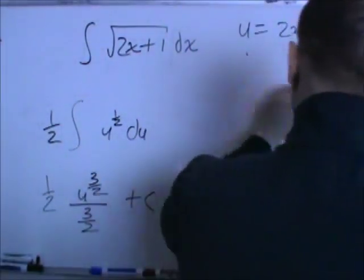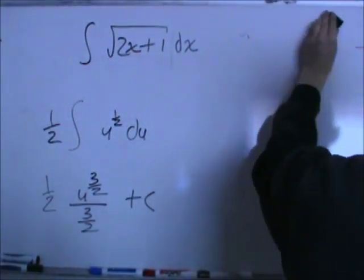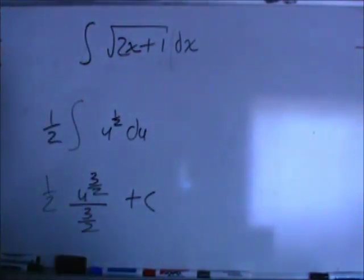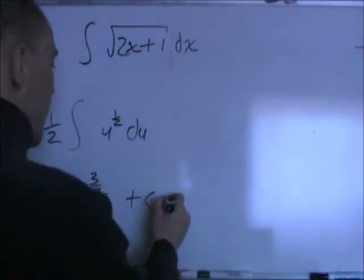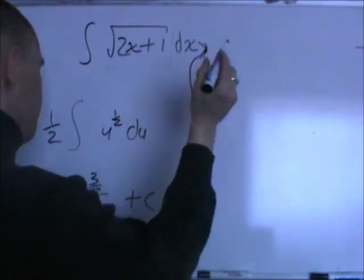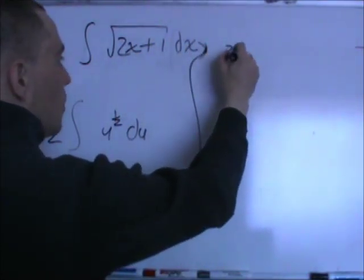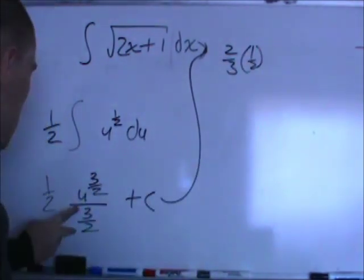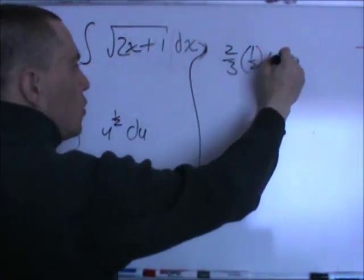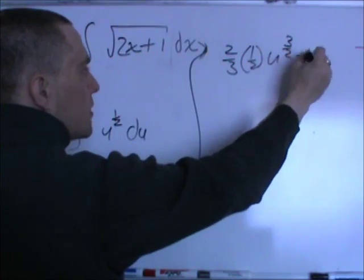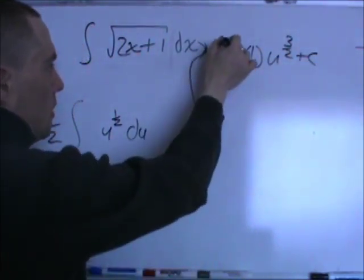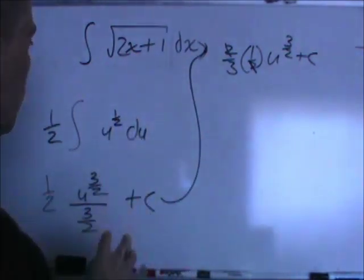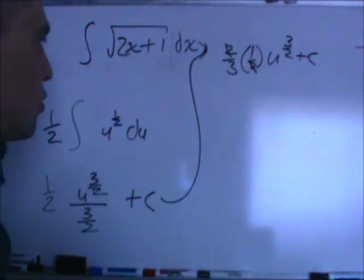And I need a little bit more room here. Okay, so now it's a matter of just simplifying this, so this is going to be the same as 2 thirds times 1 half. That flips up. u to the 3 halves, plus c. I'm going to reduce here.